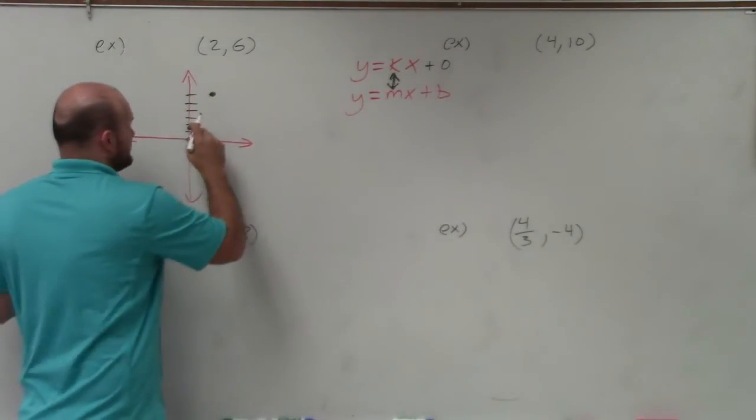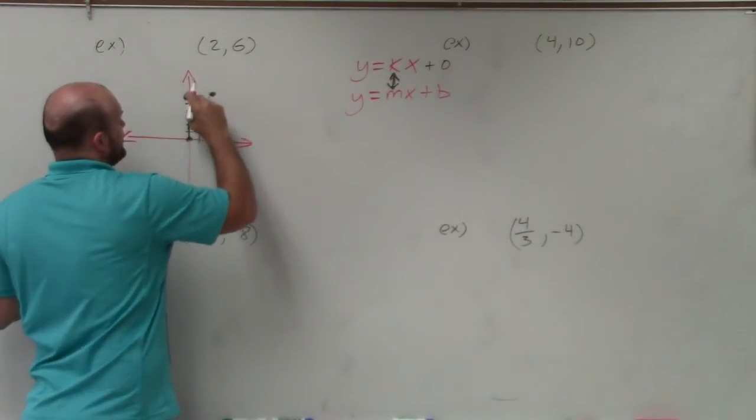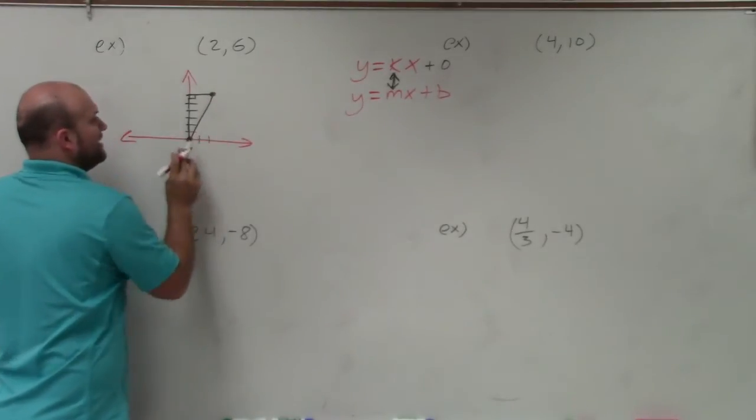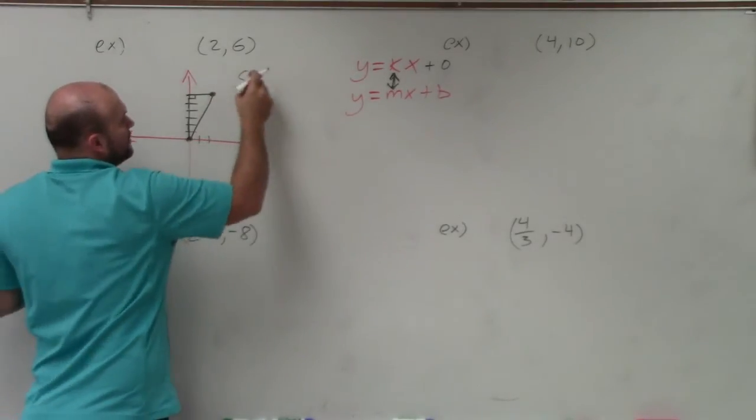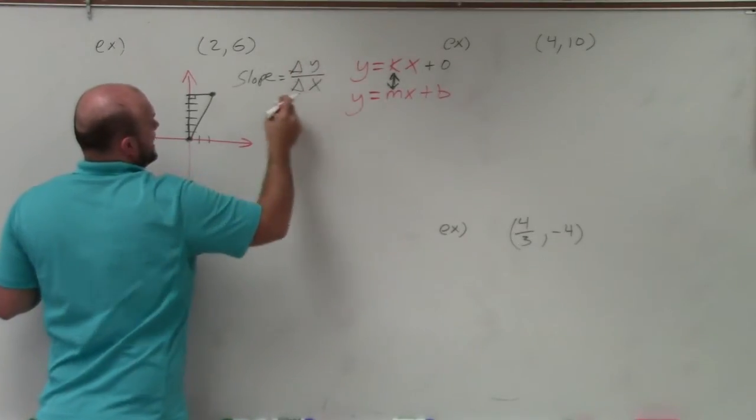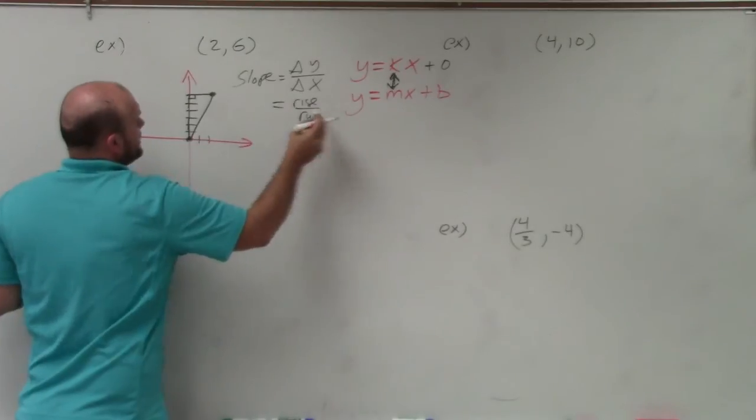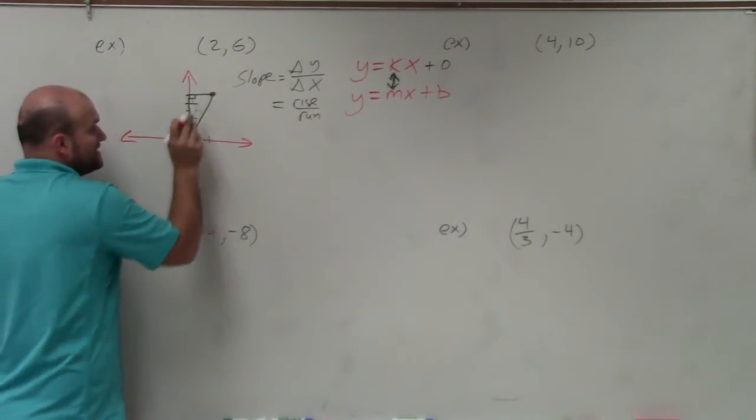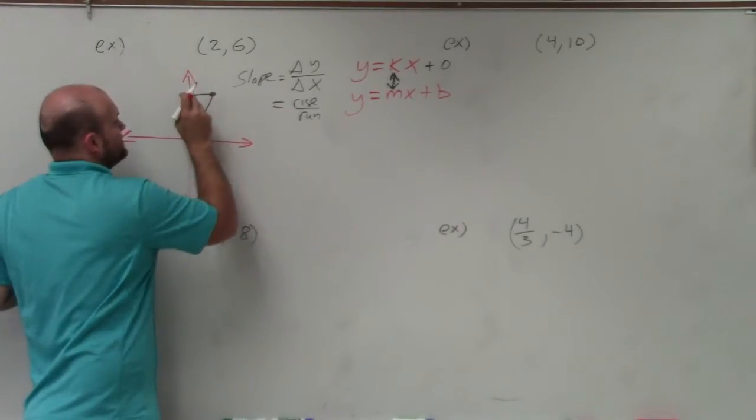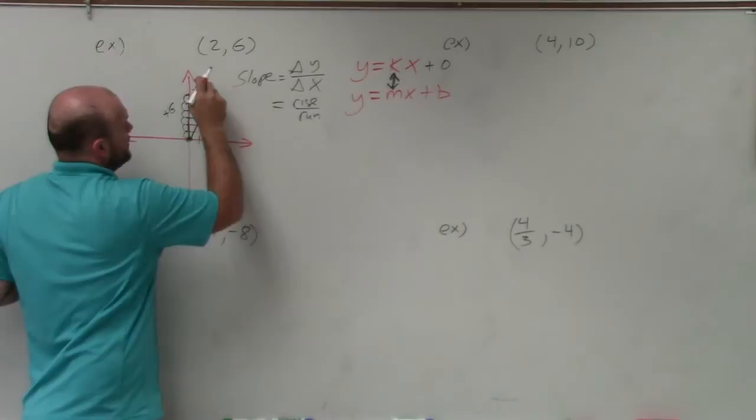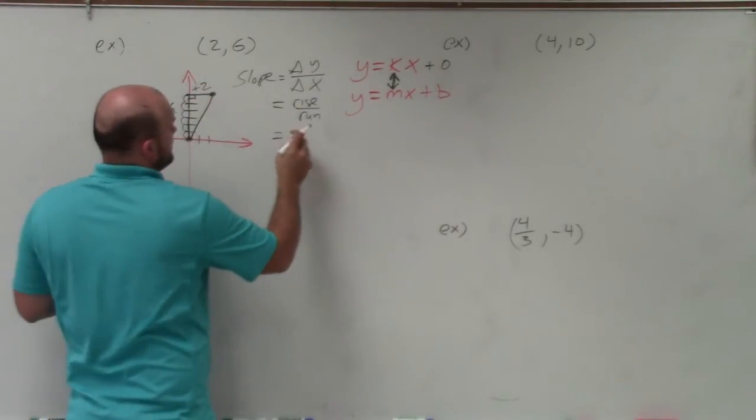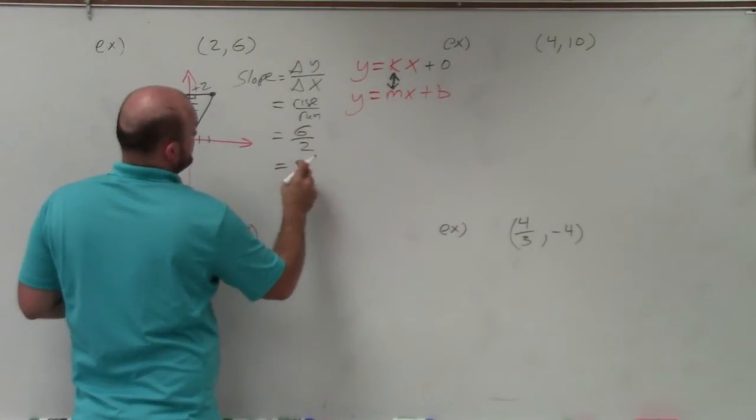So to do that, we use a slope triangle. Basically, I'm going to create vertical and horizontal lines to create a 90-degree angle, which creates my slope triangle. Now, remember, slope is basically the change in y over the change in x, or rise over run. So between this point and this point, the change in my y-coordinates is 1, 2, 3, 4, 5, 6. So I go positive 6, and then I go over 2 to the right. So therefore, I can say that my slope is 6 over 2, which is equal to 3.